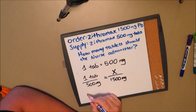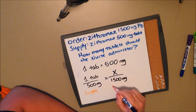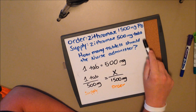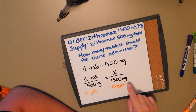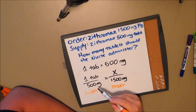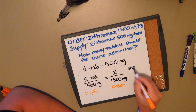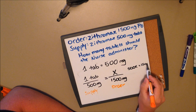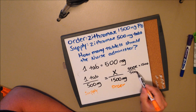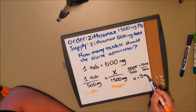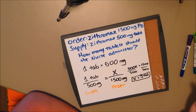On the left you've got your supply, and on the right you've got your order. Our supply says one tab equals 500 milligrams, and we've ordered 1500 milligrams — the question is asking how many tabs. You cross multiply: 500 times X equals 500X, and 1500 times 1 equals 1500. Divide by 500 on both sides, giving you X equals 3 tabs. And that is your answer. Let's move on to the next question.